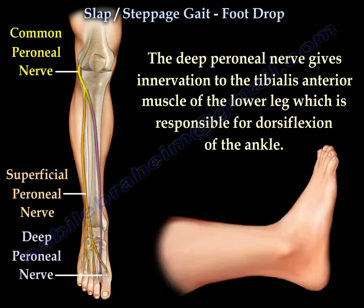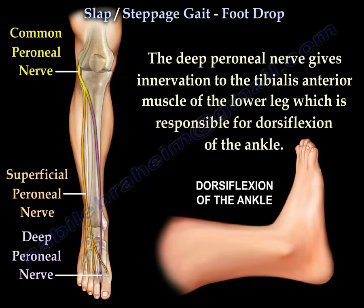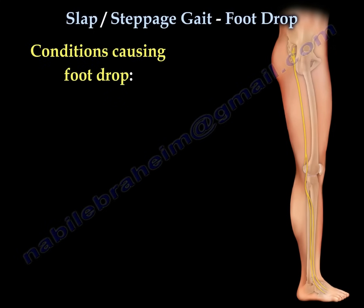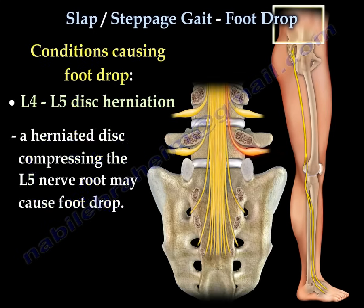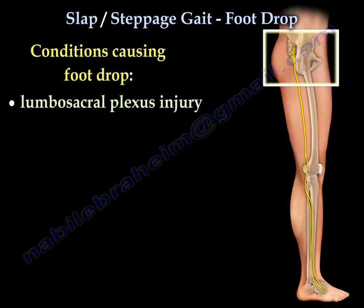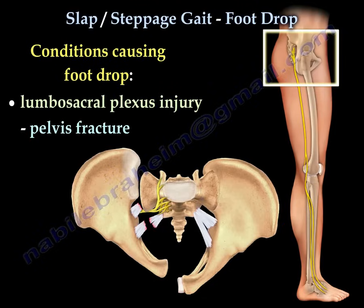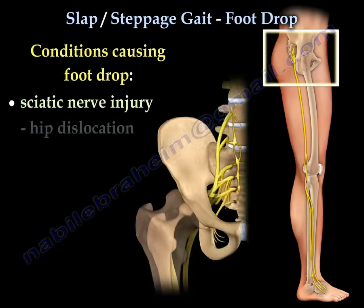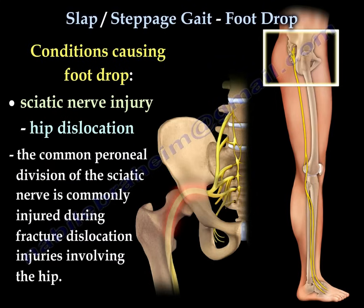Here you can see an example of dorsiflexion of the ankle. Conditions that cause foot drop include L4-L5 disc herniation — a herniated disc compressing the L5 nerve root may cause foot drop — and a lumbosacral plexus injury. Foot drop may also be caused by a sciatic nerve injury. The common peroneal division of the sciatic nerve is commonly injured during fracture dislocation injuries involving the hip.